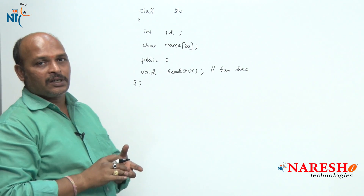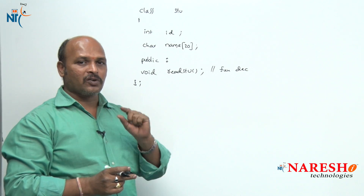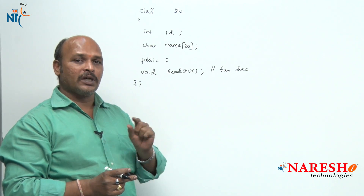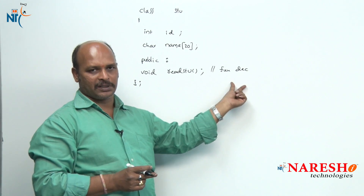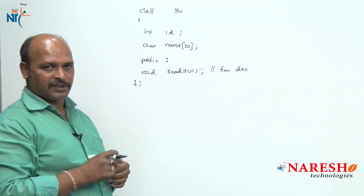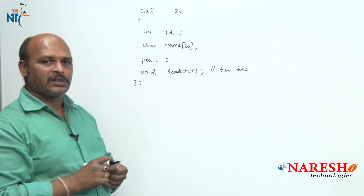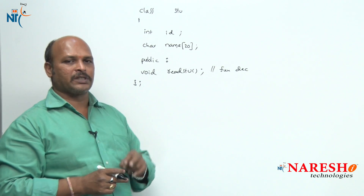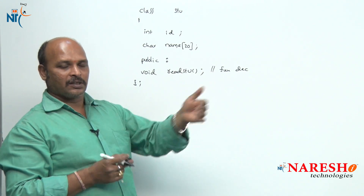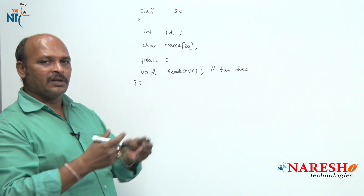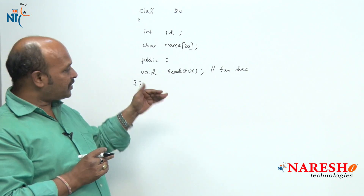A function has three parts: function declaration, function calling, and function definition. We have now completed only the function declaration part. Next, how to define the member function — we can define it in two ways: within the class or outside the class. I will now show you how to define a member function within the class.